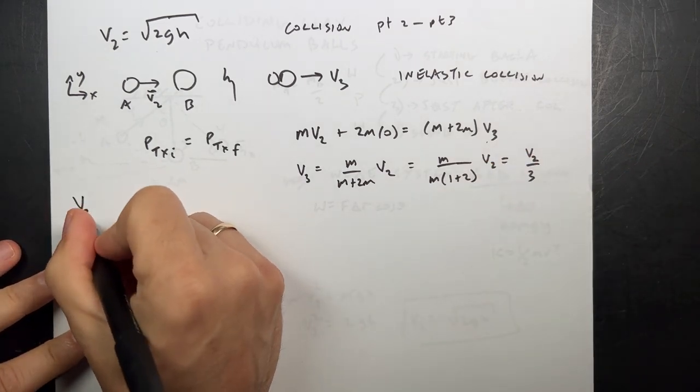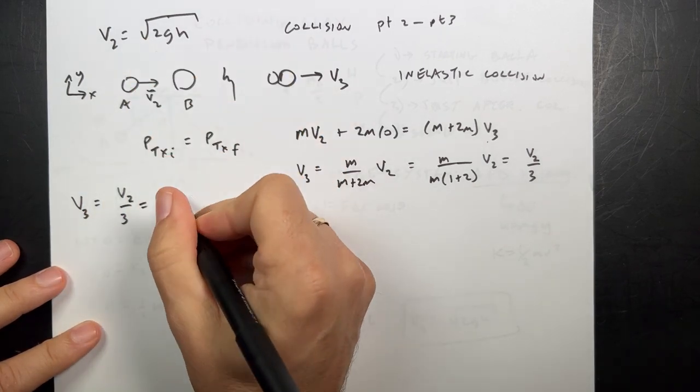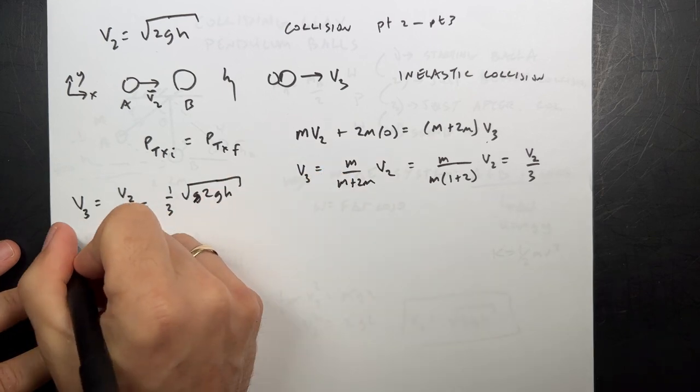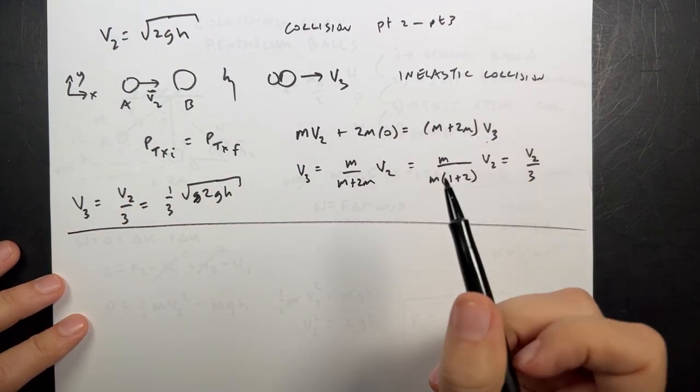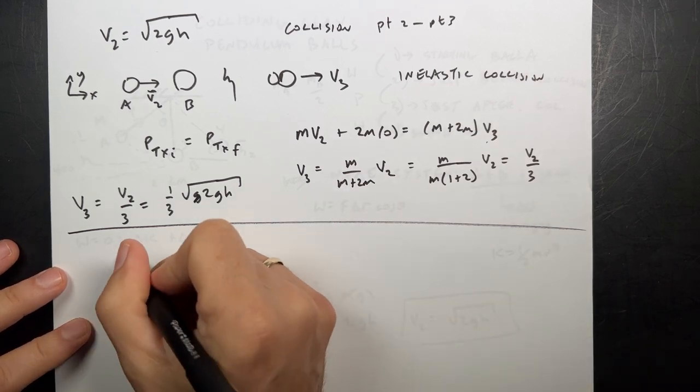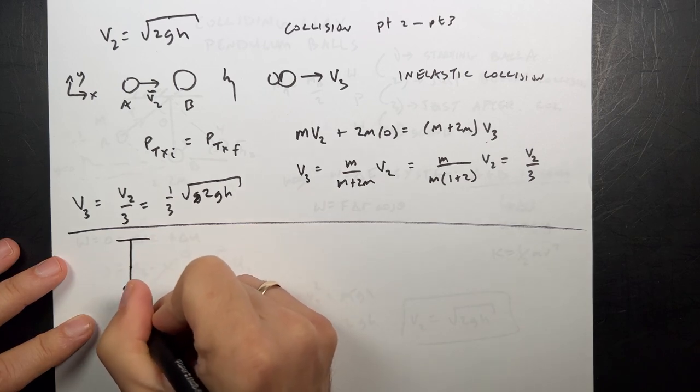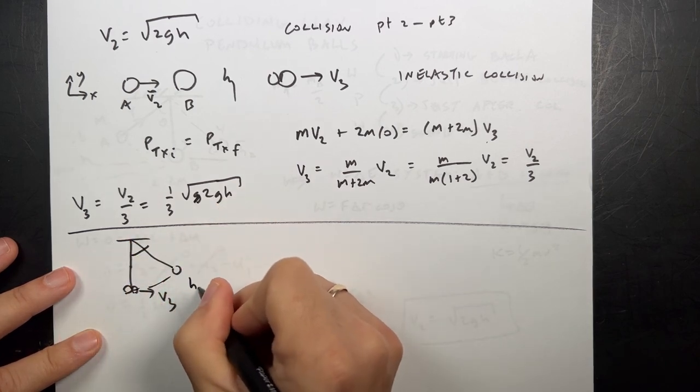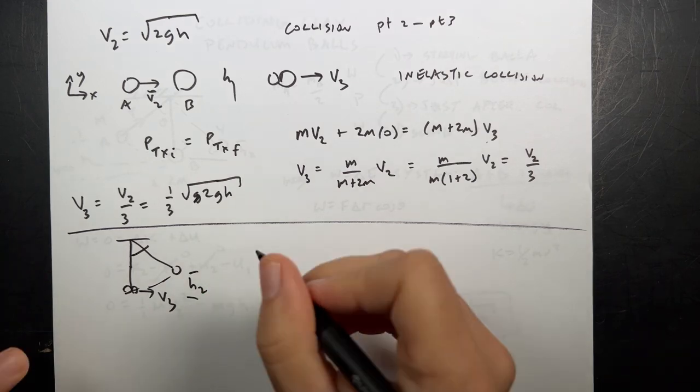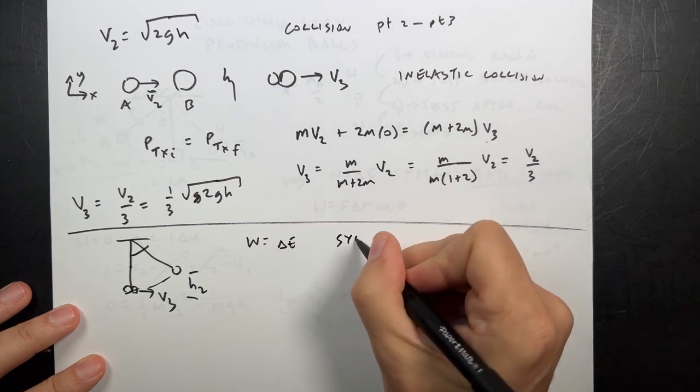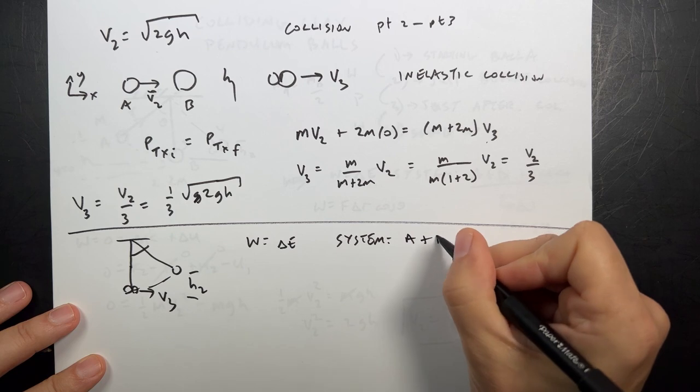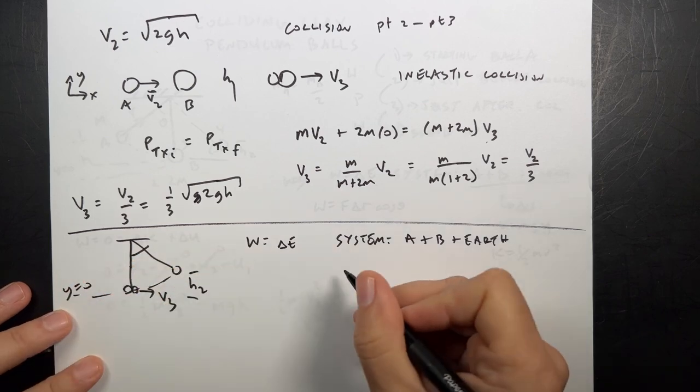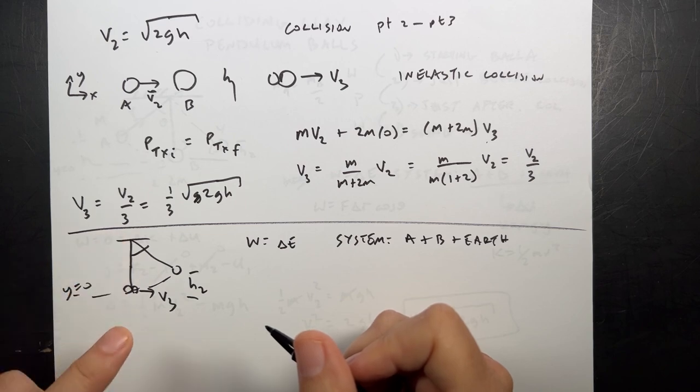Now if I want to, and I do, V3 is V2 over 3, but V2 is that, so it's going to be one-third the square root of 2GH. Now we're going to go from 0.3 to 0.4, and we're going to go back to the work energy. I have my two balls connected together, they have some velocity V3, and then they're going to swing up some height H2. And I don't need the angle, I just want H2. So again, I'm going to use work as the change in energy, same system, A plus B plus Earth, and Y equals 0 down here. Same thing. No work done on the system, because the tension is perpendicular to the path, and gravity is part of the system.